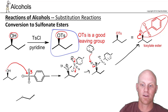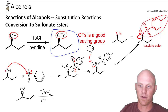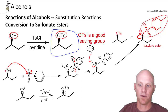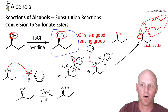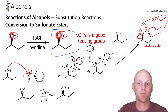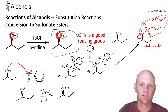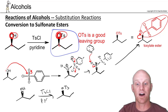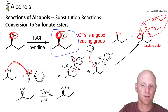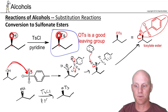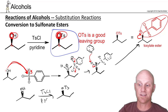We add tosyl chloride and pyridine to get a great leaving group, and notice the configuration is not inverted. The reason it's not inverted is because the oxygen present in our alcohol is the same oxygen in our product — we haven't broken that wedge bond at all, so there's no inversion. We never actually attacked this carbon; the substitution actually took place at the tosyl chloride, with this oxygen replacing the chlorine.